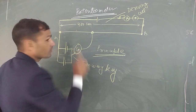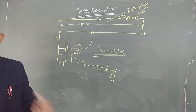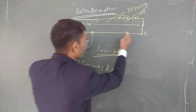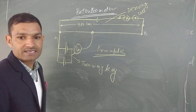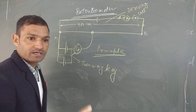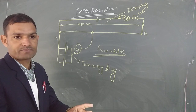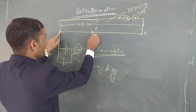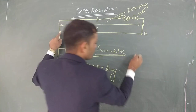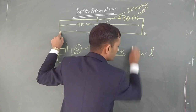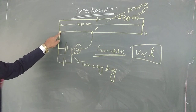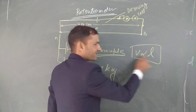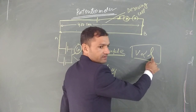What is the bridge principle? The potential drop across any portion of the wire is directly proportional to the length of that portion of the wire. So, the potential V is directly proportional to the length.